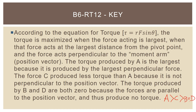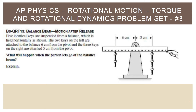Take a second to pause and write that down. Moving on to the next one — this should be on the back side or the top of the second page. This one is B6QRT13: balance beam motion after release. It says five identical keys are suspended from a balance held horizontally. The two keys on the left are attached six centimeters from the pivot, and the three keys on the right are attached five centimeters from the pivot. What will happen when the person lets go of the balance beam? Explain.